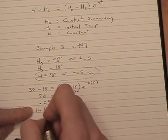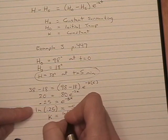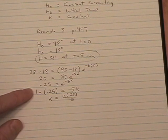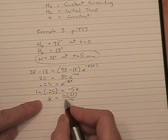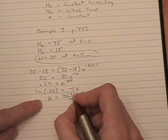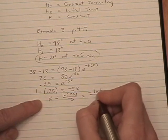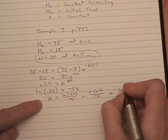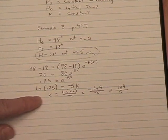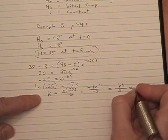So our constant k is natural log of 0.25 over negative 5. I'm going to do a little rearranging with this based on what I know about natural logs. Since this is 1 over 4, that's 4 to the negative 1, bring my negative out front and I get natural log of 4 over negative 5. Those negatives cancel, so my constant is log 4 over 5, which is 0.2 log 4.